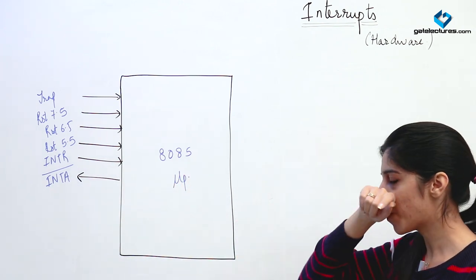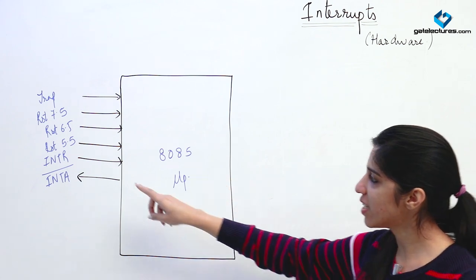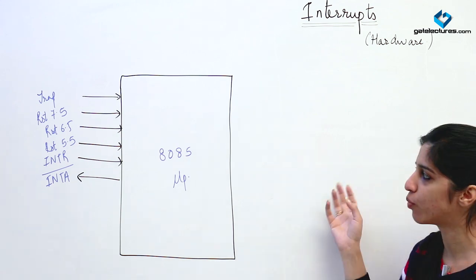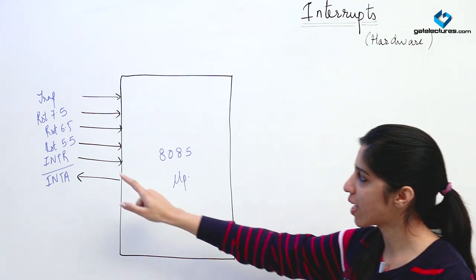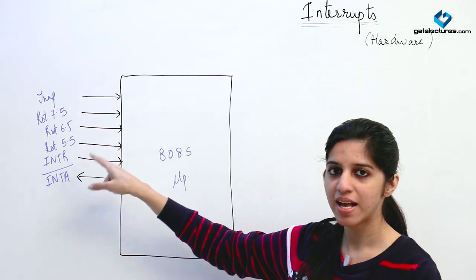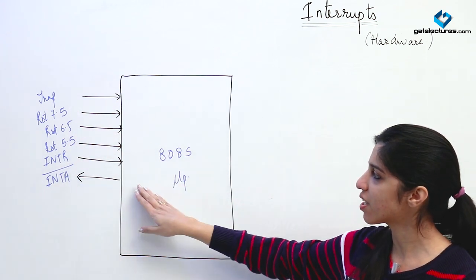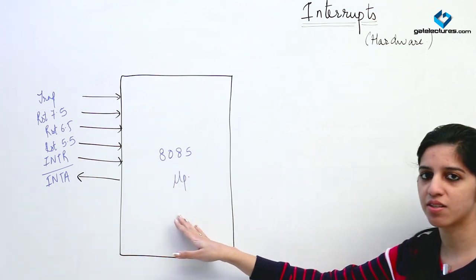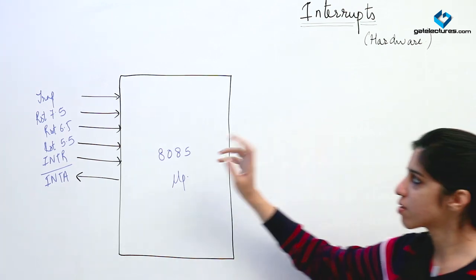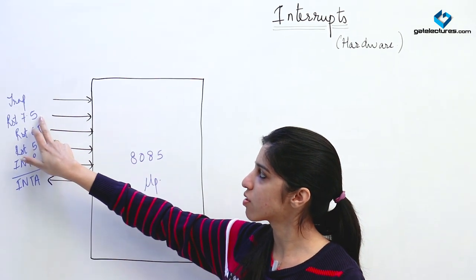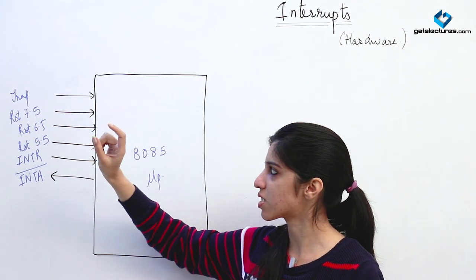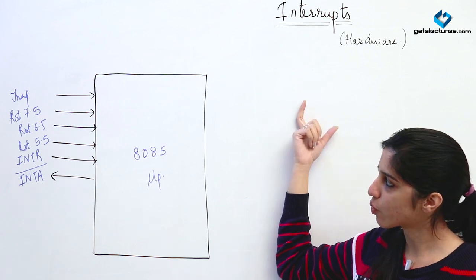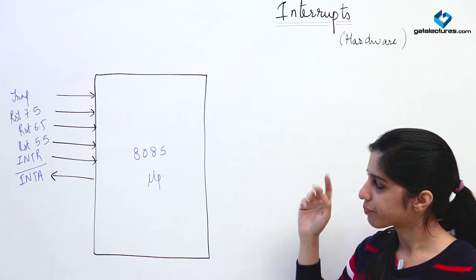What happens when an interrupt is raised? Each interrupt has a routine — an interrupt service routine — which is going to be saved in a memory. It is like a program only. Whenever you raise an interrupt, the microprocessor is going to finish the currently executing instruction. After the instruction is executed, suppose if you raise RST 7.5, this is going to take the program to a particular location and the program stored at that location is going to be executed.